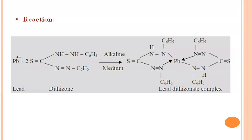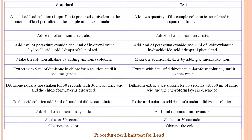For this limit test for lead, we perform a comparison method. The procedure involves making a test solution and a standard solution. To prepare the test solution, a known quantity of sample solution is transferred into a separating funnel. To this, add 6 ml of ammonium citrate, then 2 ml of potassium cyanide, and 2 ml of hydroxylamine hydrochloride, followed by 2 drops of phenol red, which acts as an indicator. After that, make the solution alkaline by adding ammonia solution, then extract with 5 ml of dithizone in chloroform solution until it becomes green.